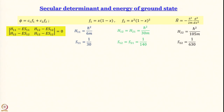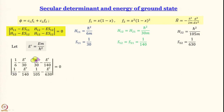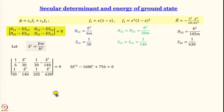Taking all these expressions and plugging them into the secular determinant, it helps to work in terms of E' equals Em over h-bar squared. H_11 is h-bar²/6m and S_11 is 1/30, so the m factors simplify. Setting the secular determinant equal to zero and expanding — multiplying diagonally and subtracting — gives the quadratic equation: 3E'² minus 168E' plus 756 equals zero.